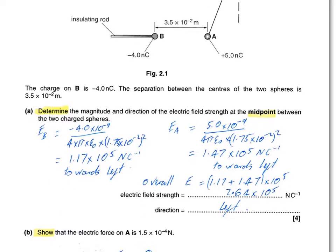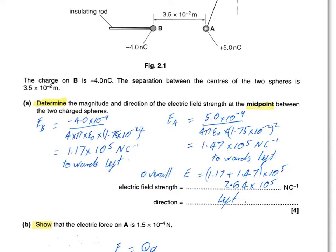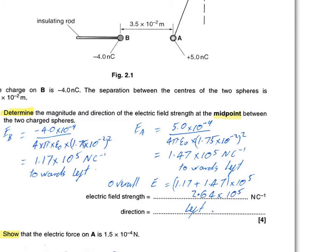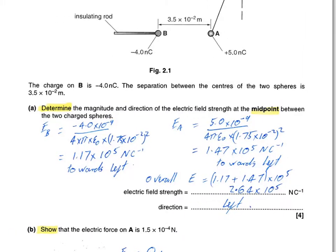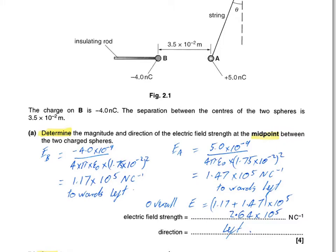We're asked to determine the magnitude and direction of the electric field strength at the midpoint between the two spheres. The thing that people most often miss is you're being asked to find it at the midpoint. Now electric field strength is a vector quantity, so we can simply add up the vector field strength due to A and due to B. We'll just need to be a little bit careful when we're thinking about directions.